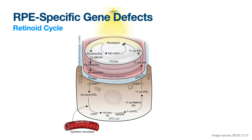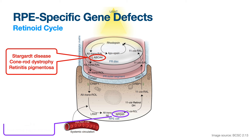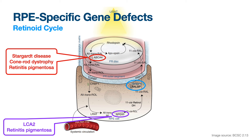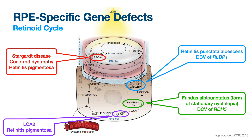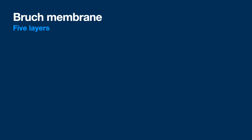Going back to retinoid cycle gene defects: Stargardt, cone-rod dystrophy, RP from ABCA4. Luxturna targets RPE65, causing LCA2 and RP. CRALBP (cellular retinaldehyde-binding protein), when defective, causes retinitis punctata albescens. Retinol dehydrogenase (RDH5) causes fundus albipunctatus.